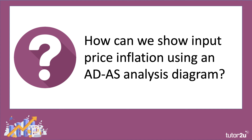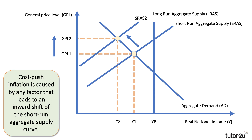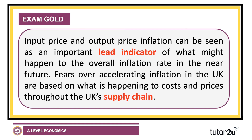How can we show this using an AD/AS analysis diagram? This is clearly a good example of cost-push inflation, which is caused by any factor that leads to an inward shift of the short-run aggregate supply curve, as shown on this diagram. For many firms across the UK, inputs are becoming more expensive, causing the short-run aggregate supply curve to shift to the left, which drives up the general price level.